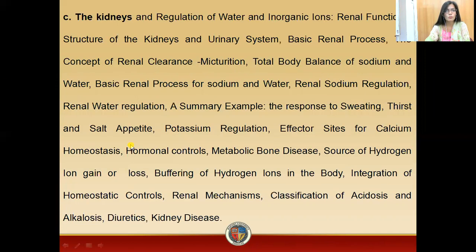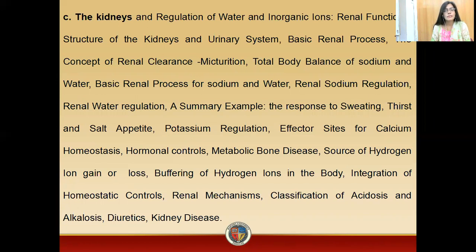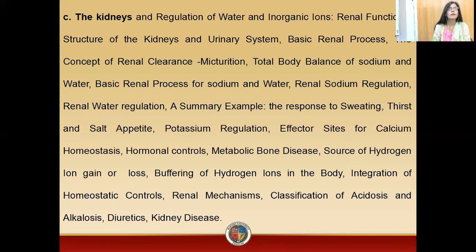Then we will move towards the kidney. We will have a general discussion on the anatomy of the kidney, then mainly discuss its functions. We will see how ions are regulated by the kidney, what is maturation, and how the kidney acts as a buffer system for our body. We will study what is acidosis, what is alkalosis, then have a general discussion on diuretics — which we will discuss in detail in our fourth semester — and on kidney diseases.